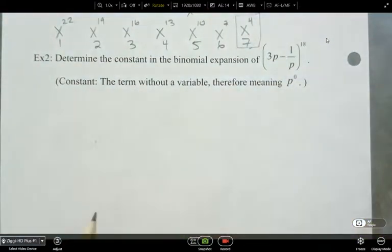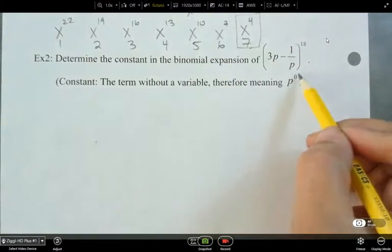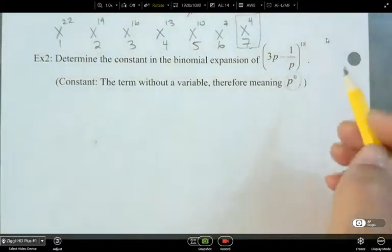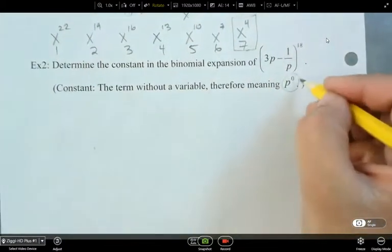Okay, so what is the variable if it's the constant? Do we have a variable if it's a constant? No, so it's going to be the term with p to the power of 0 because p to the power of 0 equals 1.